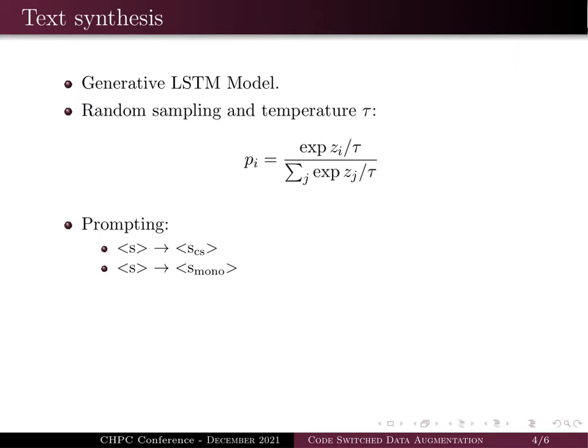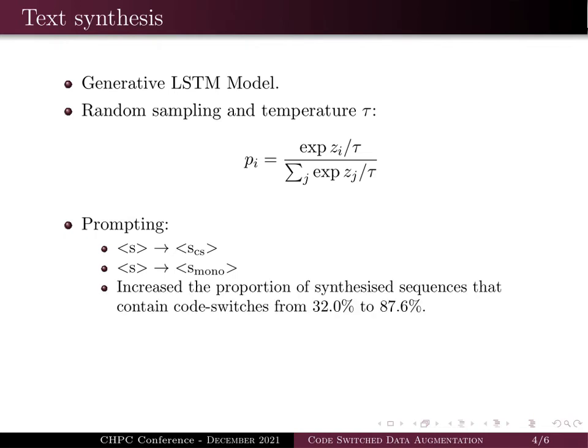We propose the use of prompting to generate code-switch sequences. This is accomplished by replacing the start sequence token of all sequences which contain code switches with a unique code-switch start sequence token, while monolingual sequences are prepended by a monolingual start sequence token. During text synthesis we supply the model with the code-switch start sequence token, and we found this increased the proportion of synthesized sequences containing code switches from 32% to 87.6%.